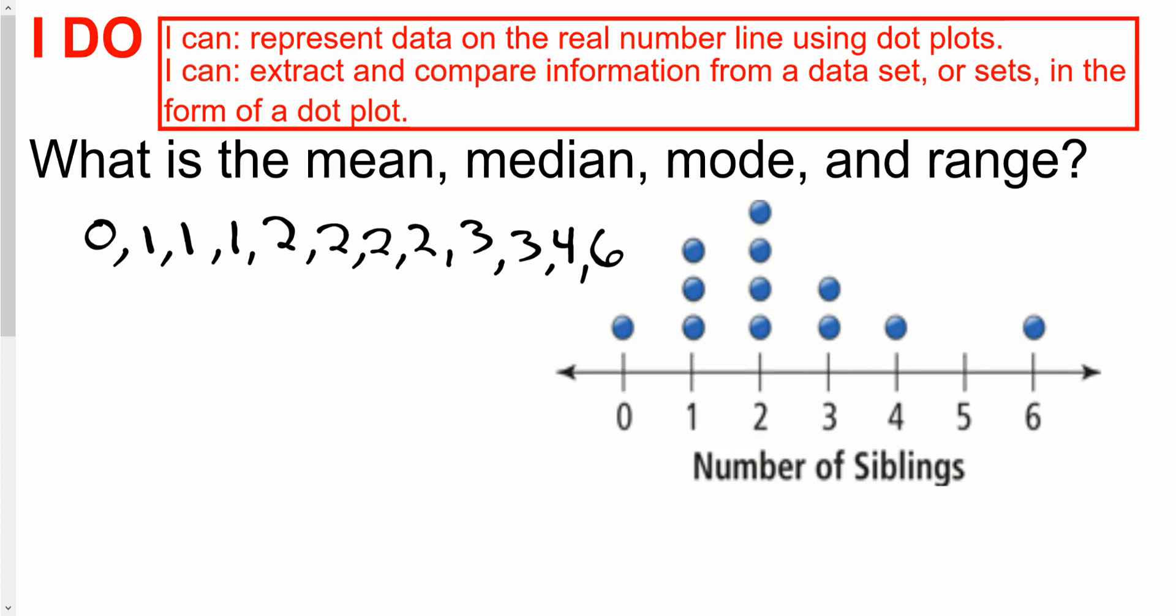So we can actually take this data and plug it into our calculator and have it calculate some stuff for us. Or we can do it by hand. But before I do that, I just want to double check and make sure I pulled all my information correctly. I'm going to double check this. So I've got a zero here. I've got three ones. I've got four twos, one, two, three, four. I've got two threes, a four, and a six. So just to double check my data grab there from the dot plot.